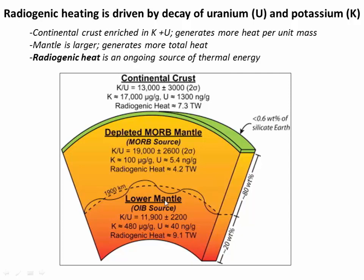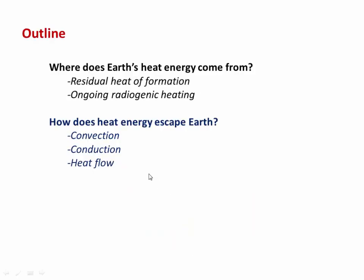Earth is essentially its own nuclear reactor that is powering the motion of plates on its surface. Now that you know about where Earth's heat energy is coming from — residual heat and ongoing radiogenic heating — let's look at how that energy escapes Earth and drives plate tectonics along the way.